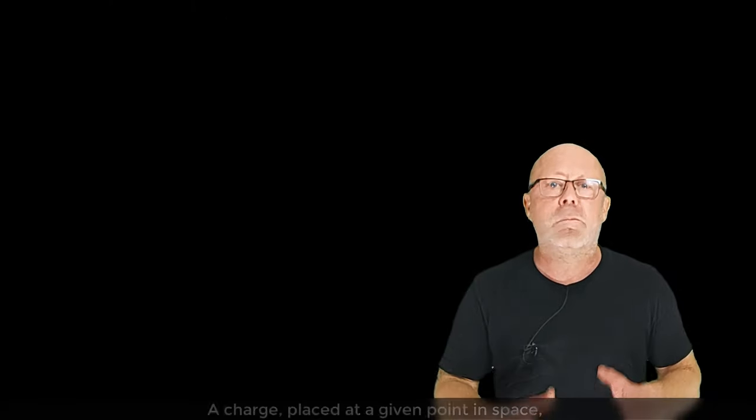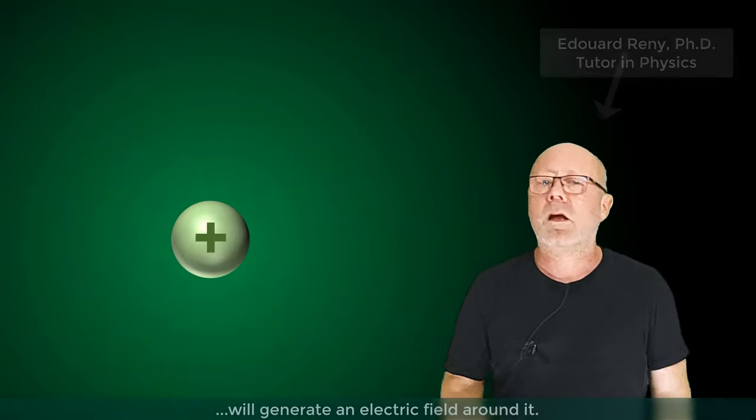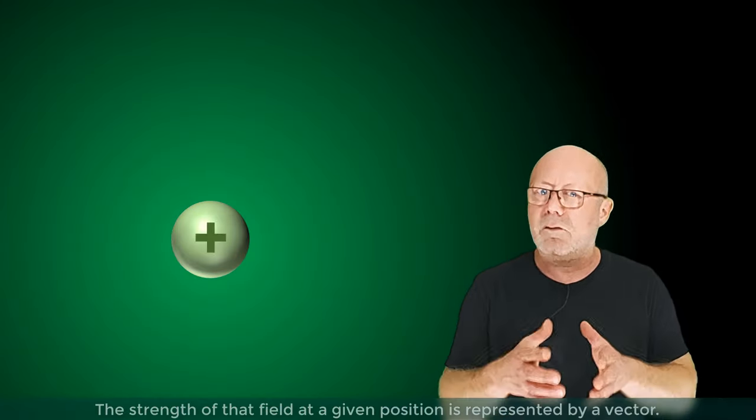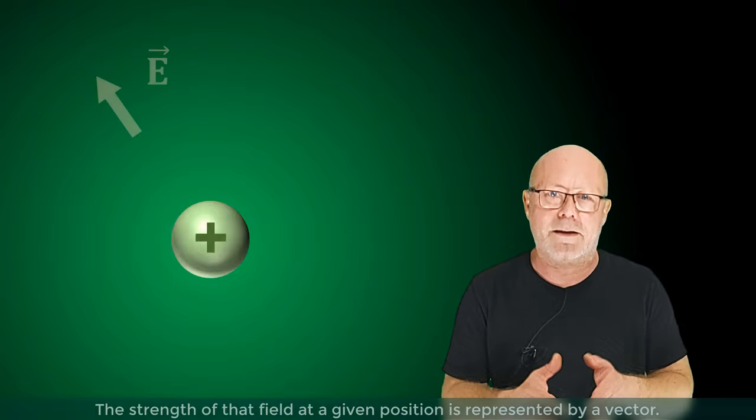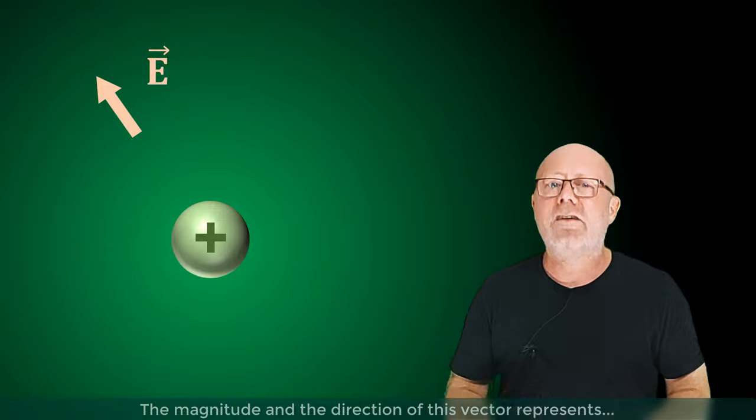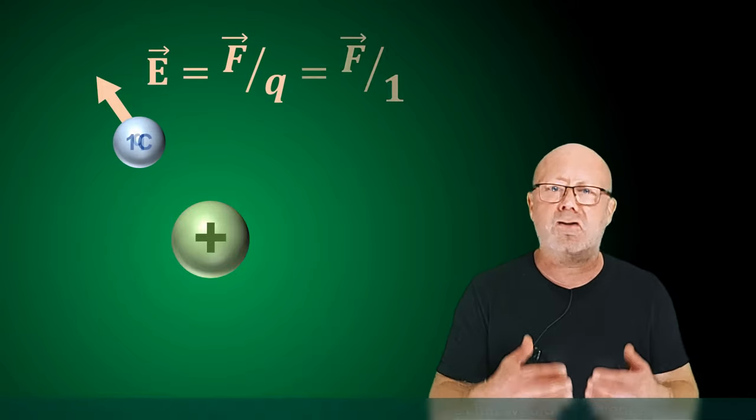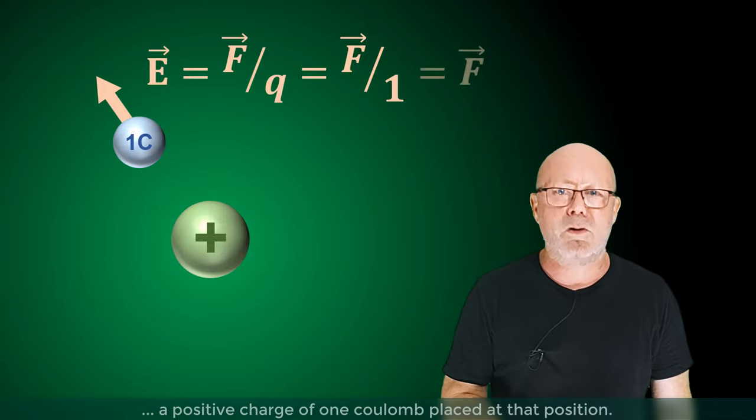A charge placed at a given point in space will generate an electric field around it. The strength of that field at a given position is represented by a vector. The magnitude and direction of this vector represent the magnitude and direction of the force that would experience a positive charge of one coulomb placed at that position.